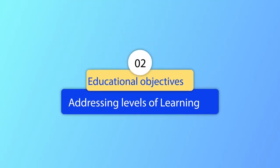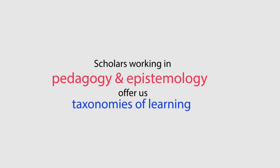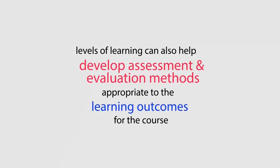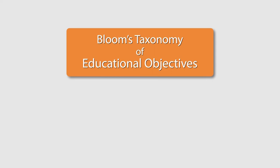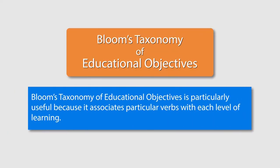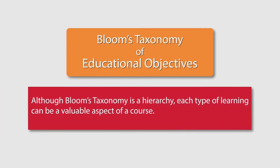Educational objectives addressing levels of learning: scholars working in pedagogy and epistemology offer us taxonomies of learning that can help make learning outcomes more precise. These levels of learning can also help develop assessment and evaluation methods appropriate to the learning outcomes for the course. Bloom's Taxonomy of Educational Objectives is particularly useful because it associates particular verbs with each level of learning.